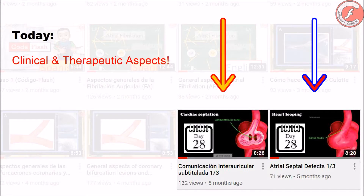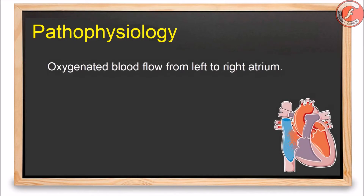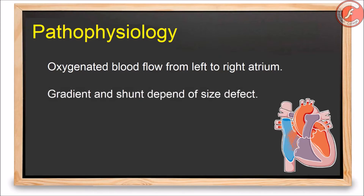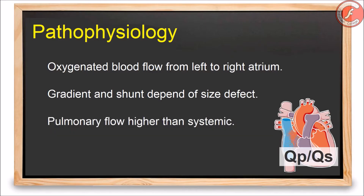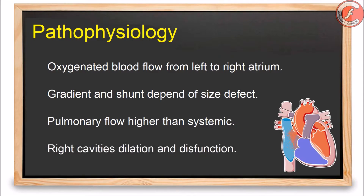Left atrial pressure is higher than right atrial pressure, resulting in continuous flow of oxygenated blood from the left to the right atrium across the defect. The pressure gradient between the two atria and the amount of shunt flow depend upon the size of the defect and the distensibility of the heart cavities. Thus, the volume of blood flow in the pulmonary circulation is greater than in the systemic circulation, measured by the pulmonary-to-systemic flow ratio (QP:QS). The increased flow leads to right-sided dilatation, right ventricular dysfunction, pulmonary artery dilatation, and pulmonary vascularity increment.